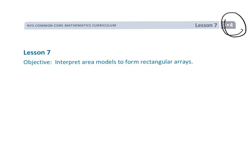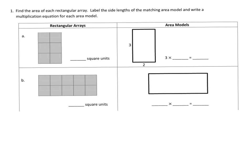This is grade 3 module 4 lesson 7, and we are interpreting area models to form rectangular arrays. To explain what this means, I think it's easiest to just do a couple of sample problems. So here we are told to find the area of each rectangular array.